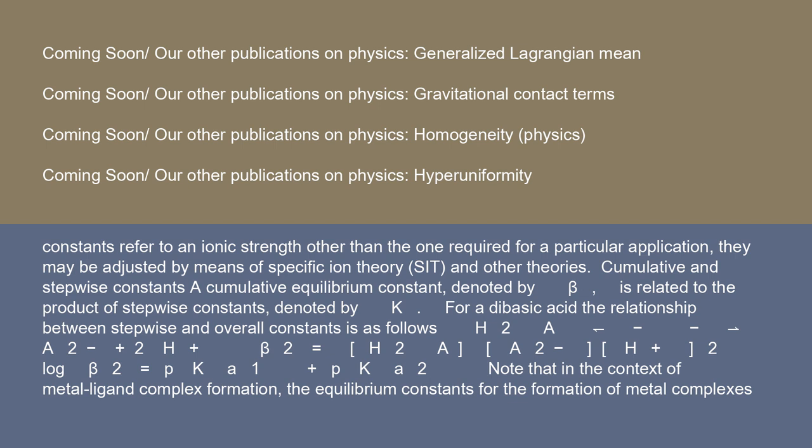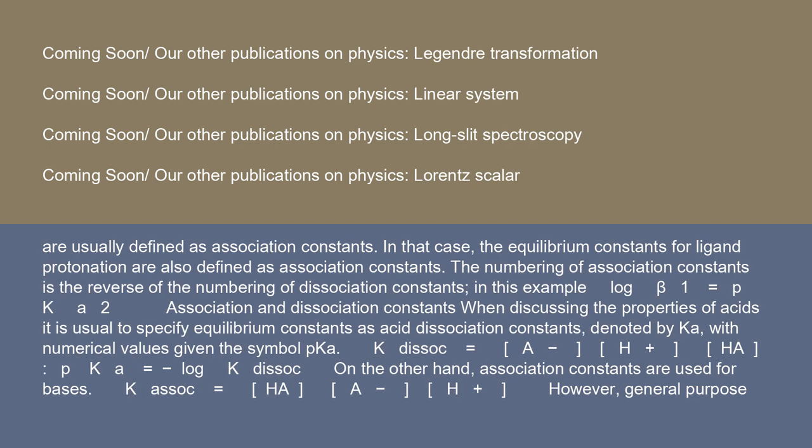In that case, the equilibrium constants for ligand protonation are also defined as association constants. The numbering of association constants is the reverse of the numbering of dissociation constants. In this example, log β₁ = pKa₂.